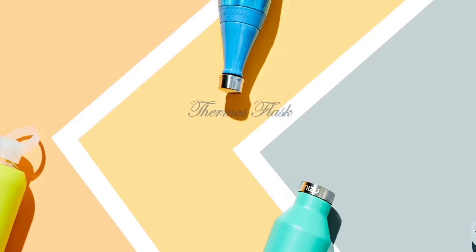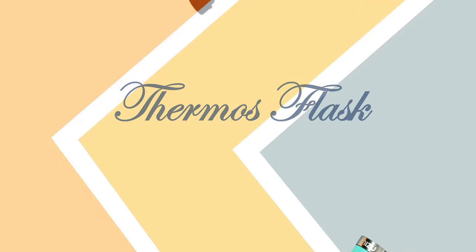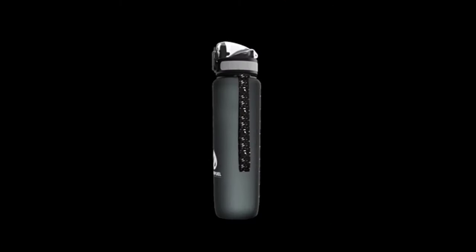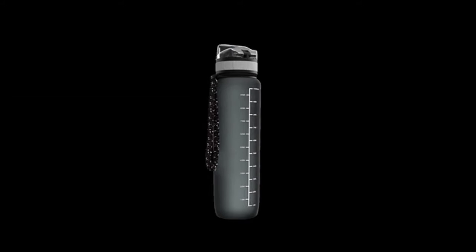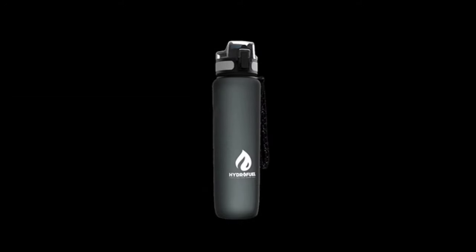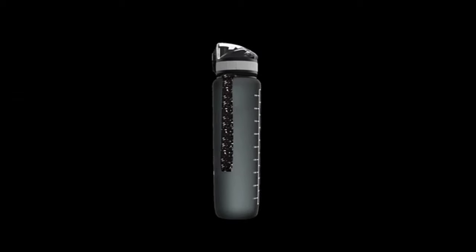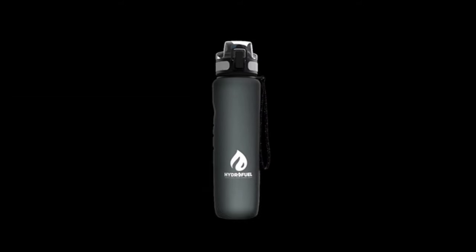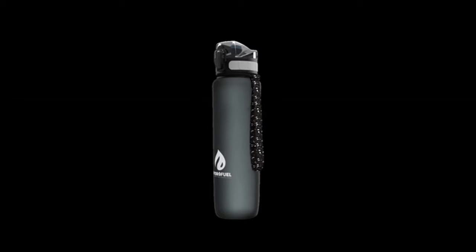Thermos flask. A thermos flask maintains the temperature of the substance present in it. It keeps hot things hot and cold things cold for a long time. This is achieved by minimizing the exchange of heat by conduction, convection and radiation.